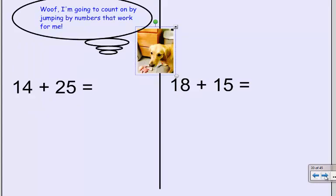So let's see Scoop do some. And Scoop says, woof, I'm going to count on by jumping by numbers that work for me. So if we have 14 plus 25, 14 is my starting number, and 25 is how much I need to jump by. So for me, a lot of times it's easiest to just jump by tens. So I think 25 is made up of one ten, two tens, and a five. So that's how I'm going to choose to jump.